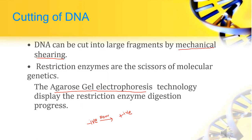Cutting of DNA: DNA can be cut into large fragments by mechanical shearing. Restriction enzymes are the scissors of molecular genetics. They help identify the location where a designated gene is introduced into a vector genome. Agarose gel electrophoresis technology displays the restriction enzyme digestion process. By using this method, passing DNA across the gel is possible. When current is applied, negatively charged DNA flows to the positive electrode and is separated into different bands.